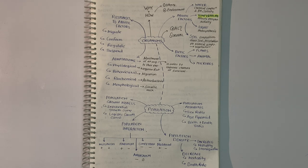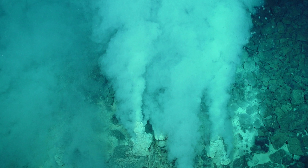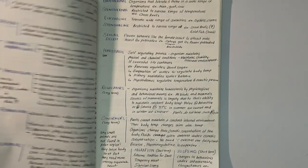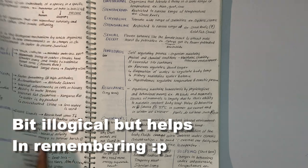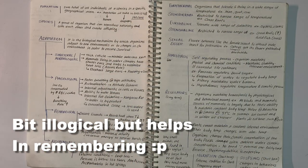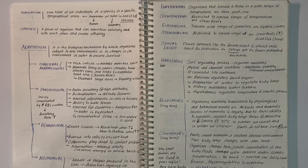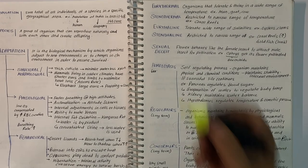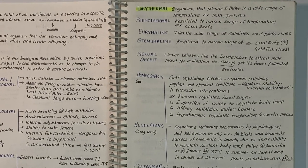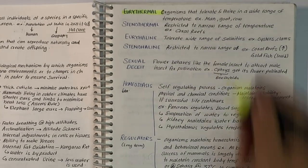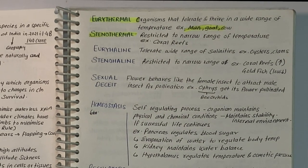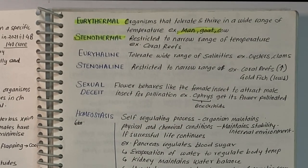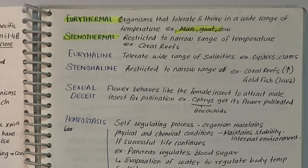Temperature variation can be so high that it ranges from sub-zero levels in polar areas and high altitudes to 500 degrees Celsius in tropical deserts in summer. There are also unique habitats like thermal springs and deep-sea hydrothermal vents where average temperature exceeds 1000 degrees Celsius. A few organisms — called eurythermals — can tolerate and thrive in a wide range of temperature (e.g., man, goat, cow). A vast majority are stenothermals, restricted to a narrow temperature range — examples include reptiles, insects, salmon, penguins, python, and crocodile.